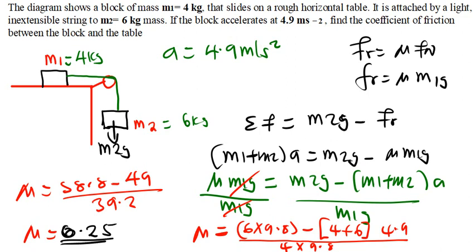Mu doesn't have units. Let me confirm the calculation: we have 4.9 times 9.8 times 4, which gives 39.2 in the denominator. So the correct answer for this question is 0.25.